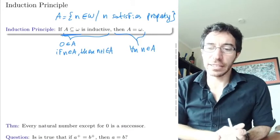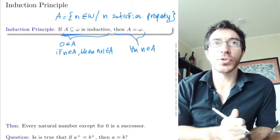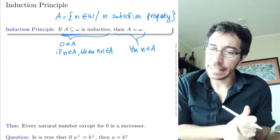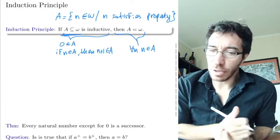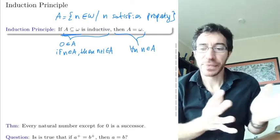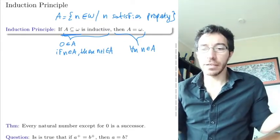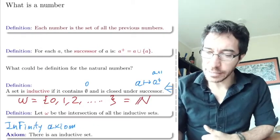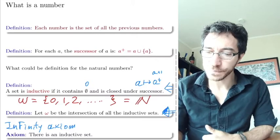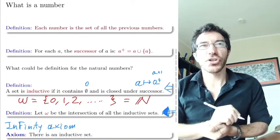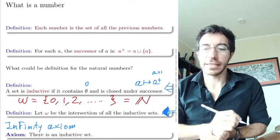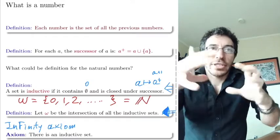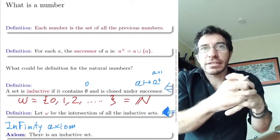So that's exactly the induction principle that you're used to from previous courses. How can we prove it? We need to prove it from our axioms. But there is nothing to prove. Omega is defined to be the intersection of all inductive sets. That means it has no strictly smaller inductive sets inside it — it's the smallest of all inductive sets.